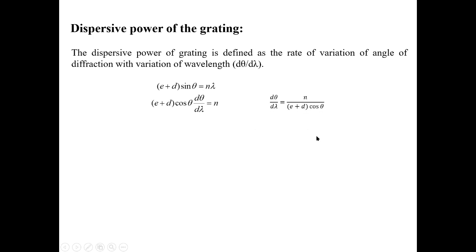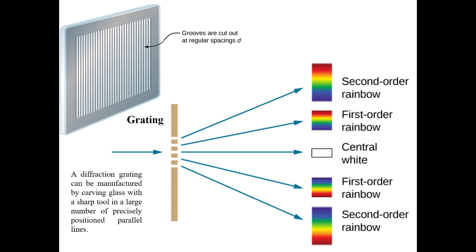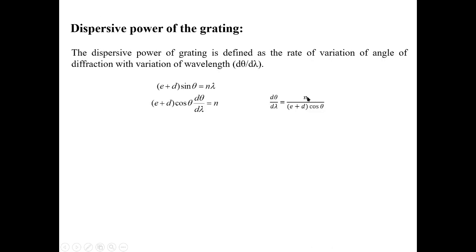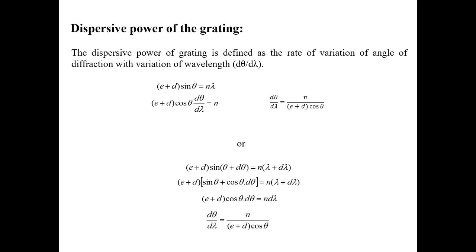It is clear that the dispersive power of grating is directly proportional to n, the order of principal maxima. We have already seen that as we move towards higher order maxima the dispersion is more, and that is clear from this expression. The value of dθ/dλ can also be found by another method.